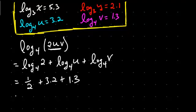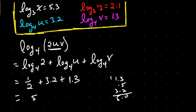All right, so what's that going to be? One-half plus 3.2 plus 1.3. Let me make sure: 1.3, 1.5, and 3.2 — that gives us 5. So I think that's going to be our final answer there: 5.